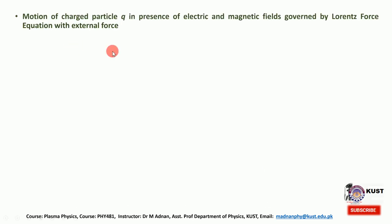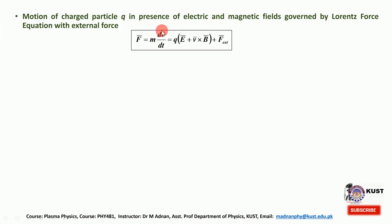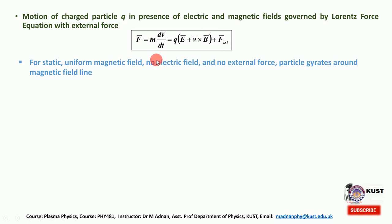Before we start with the topic magnetic mirror, let me review what we have done before. We discussed the motion of charged particles — where the charge is Q — in the presence of electric and magnetic fields governed by the Lorentz force equation. We studied the equation of motion for a charged particle in the presence of static electric and magnetic fields, and then introduced various forces: gravitational force, gradient in the field lines, and also curvature in the magnetic field profile.